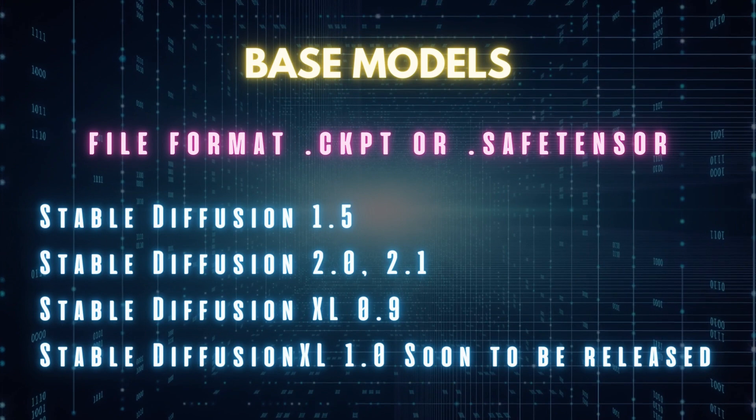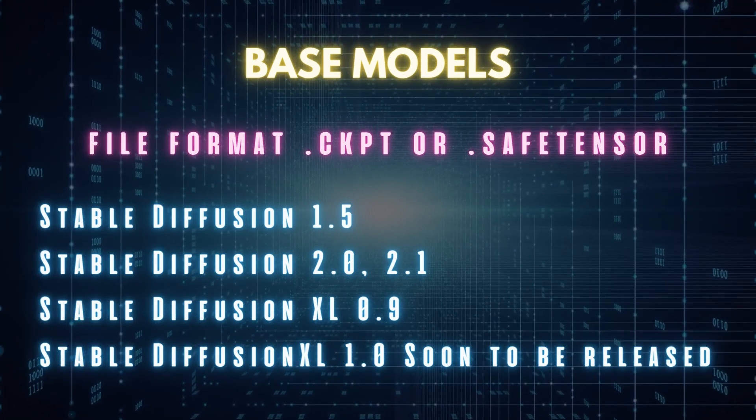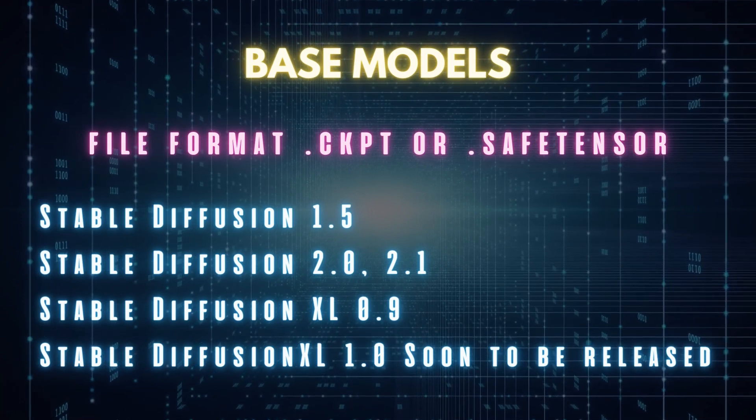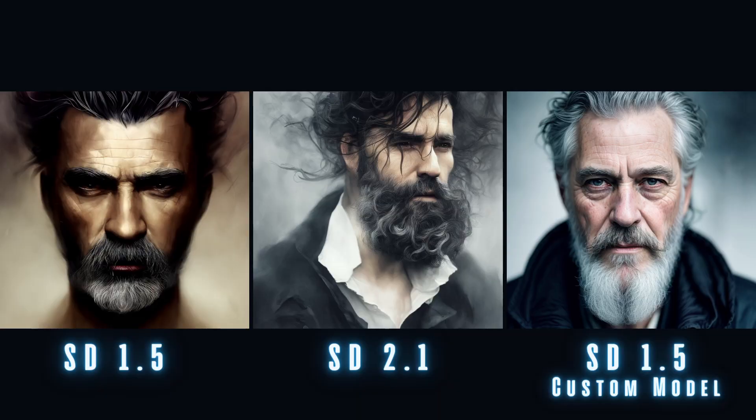Now once you've decided on a platform, what you'll need are Stable Diffusion models. Remember we talked about this data set being shrunk down to a two gigabyte file? Well, that two gigabyte file is known as a CKPT or safetensor file. The most popular one is called Stable Diffusion 1.5. I started when it was 1.4, and it updated to 1.5 just a few months after. Down the line there was Stable Diffusion 2.0, but it wasn't really that popular because 1.5 was just more versatile.